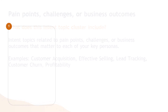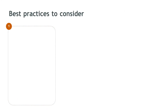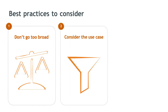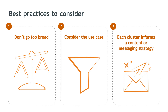A few other general best practices to consider when selecting your intent topics and curating your clusters. First, don't be too broad — focus on topics that really signal interest for your products or services and tell you what message or nurture path makes the most sense for those prospects. Next, consider your use case: for top-of-funnel use cases, your clusters can be larger and a little bit broader, while you may want to be more prescriptive and selective with your mid to lower funnel use cases. Finally, each cluster should inform a content or messaging strategy that goes with it — if it doesn't, then you should question whether or not you need that cluster.